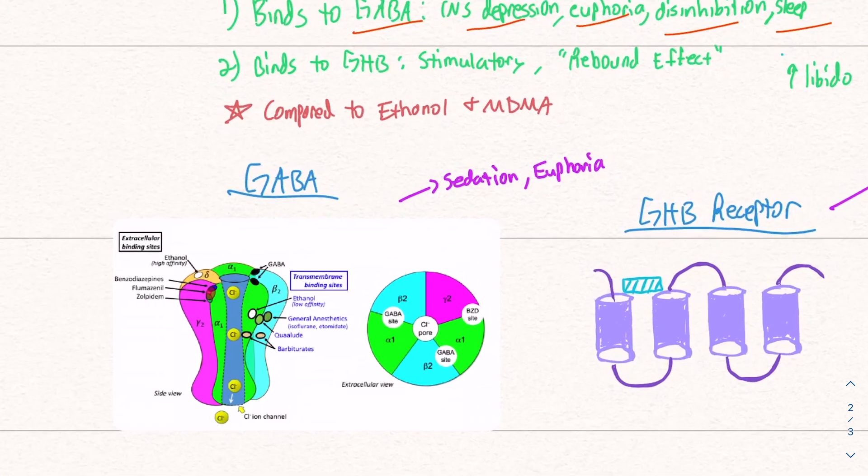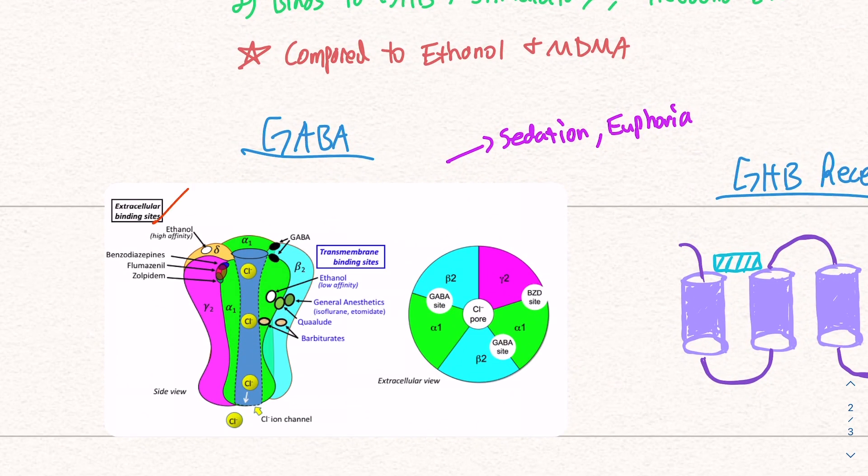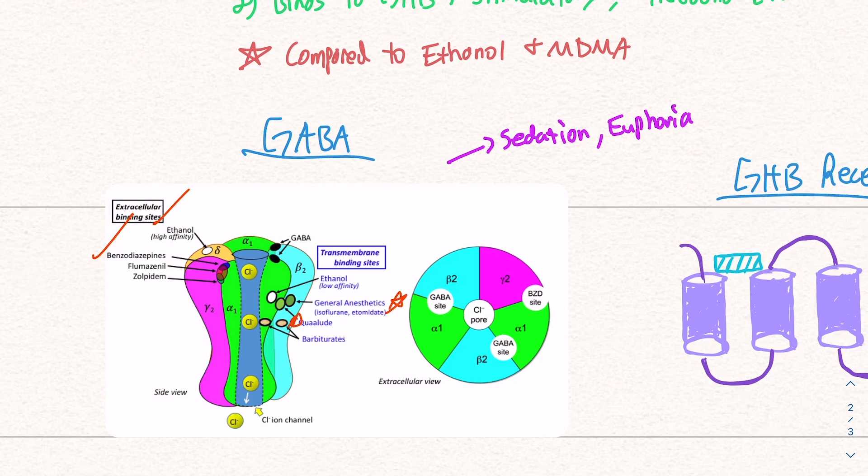In my other videos, we mentioned that GABA is a receptor that alcohol connects to, benzodiazepines like Xanax, anesthetics, and quaaludes. It's a very interesting receptor that usually produces things like sedation, euphoria, and all sorts of other things.